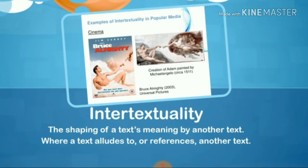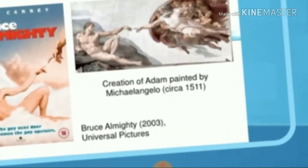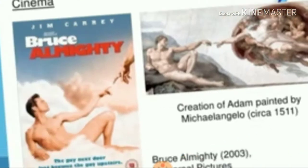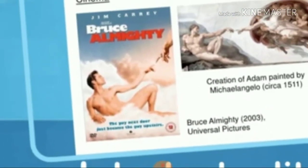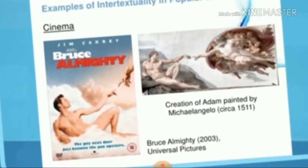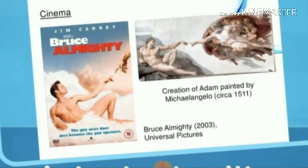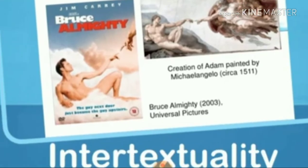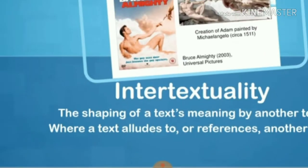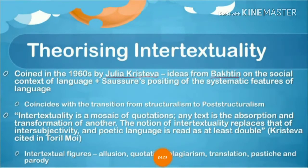You can see here a Michelangelo painting on one side and a modern movie on the other. You can see the similarity — how the modern movie draws on and relates to the classic painting. This is how context and intertextuality shape meaning.